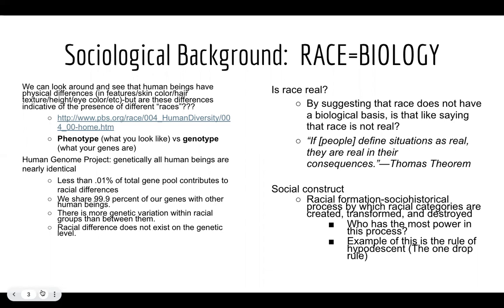For a very long time, that was assumed to be the case. But people were conflating or confusing phenotype — what you look like, what people see when they look at you — versus genotype, what your genes actually are. At the end of the 90s and early 2000s, the Human Genome Project was successful in mapping out the human genome.